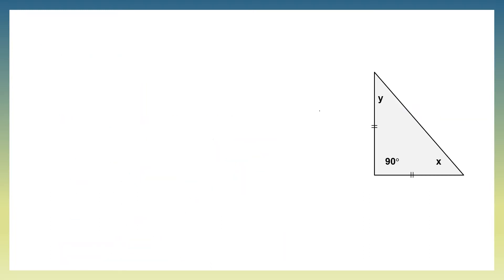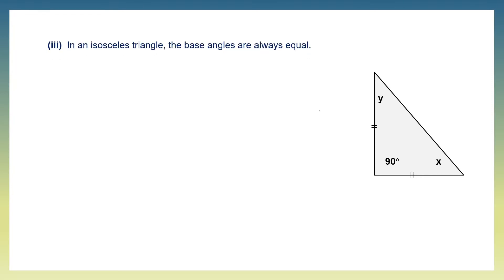Next question. We need to find angles x and y. Using the property of the isosceles triangle, the base angles are always equal. The base angles here are angle y and angle x, so angle x is equal to angle y.